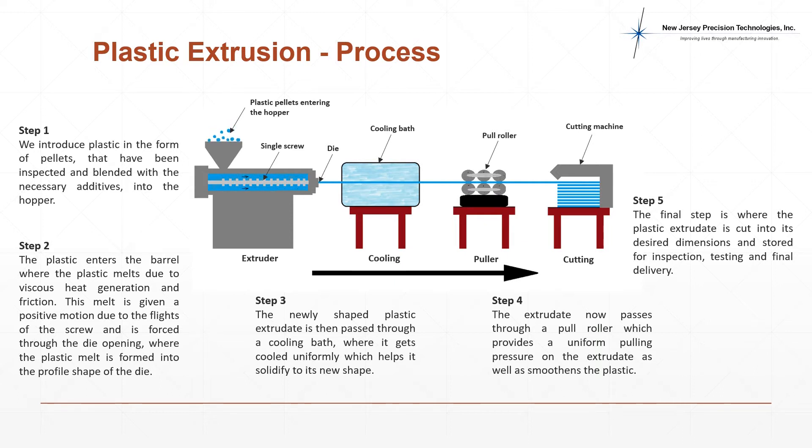After solidification, the extrudate passes through a pull roller which provides uniform pull pressure on the extrudate as well as smoothing the plastic. Finally, the extrudate is cut into its desired dimensions and sent for quality inspection.